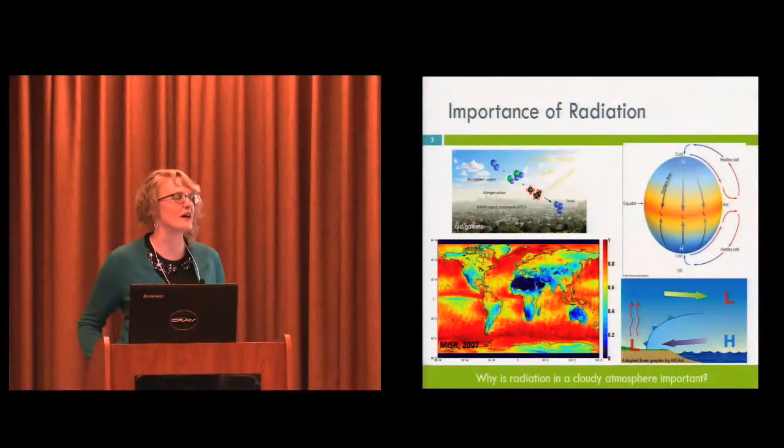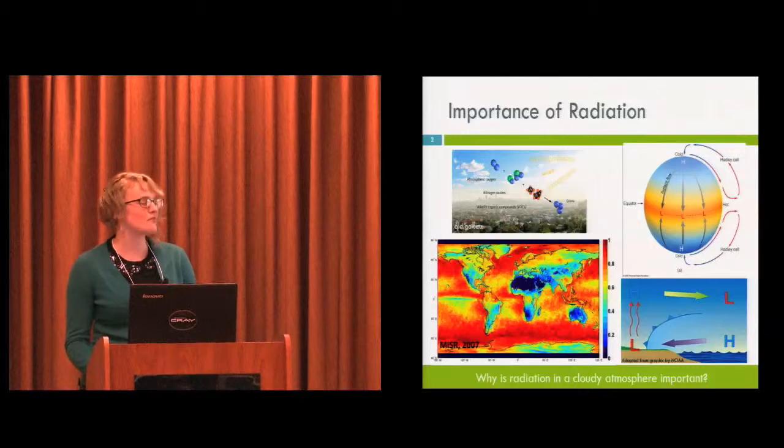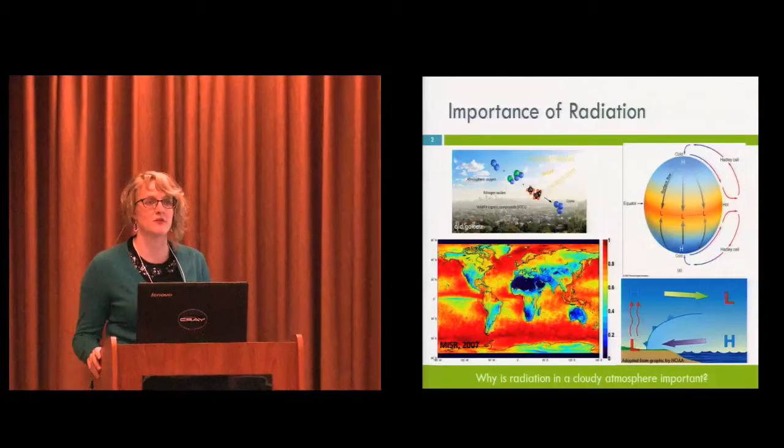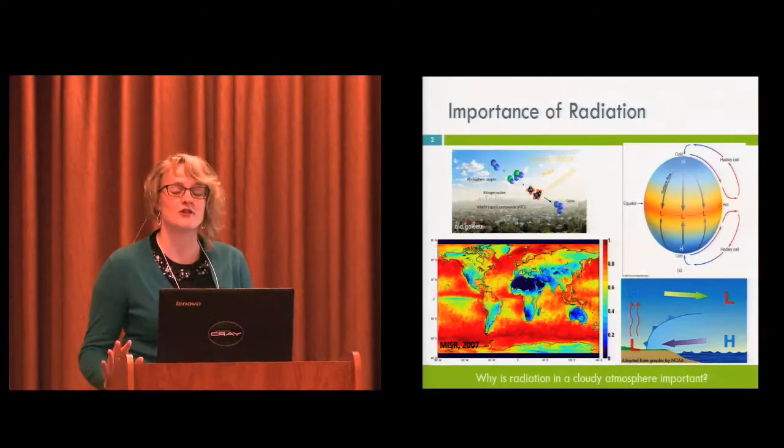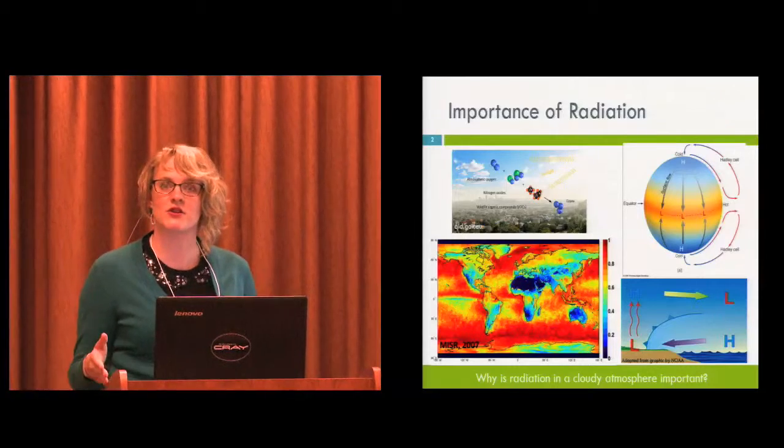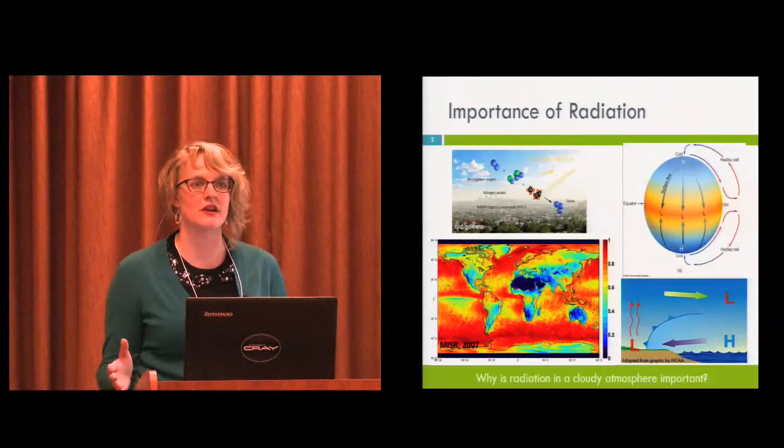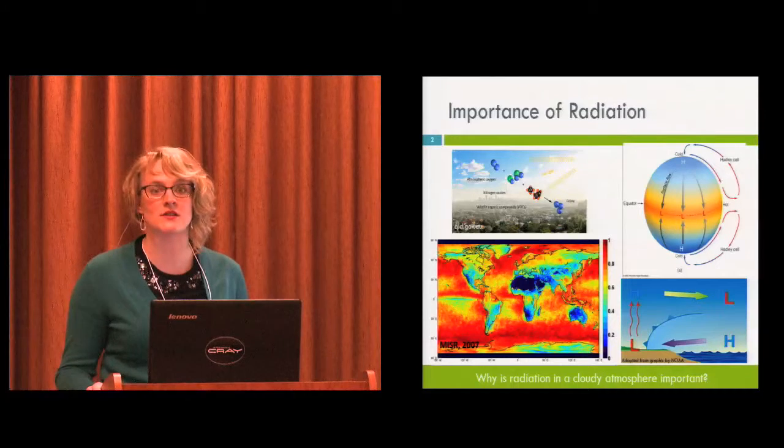The first thing I want to talk to you about is the importance of radiation in our atmosphere. It's the uneven distribution of absorbed radiation that creates temperature gradients, and those temperature gradients create pressure gradients, and those pressure gradients are what's responsible for atmospheric circulation.